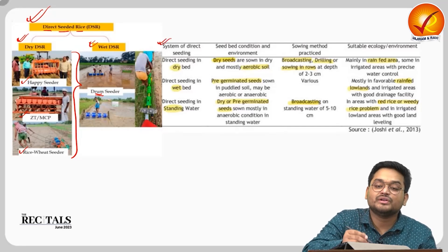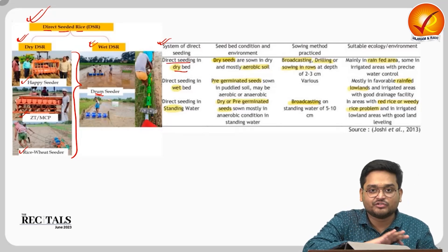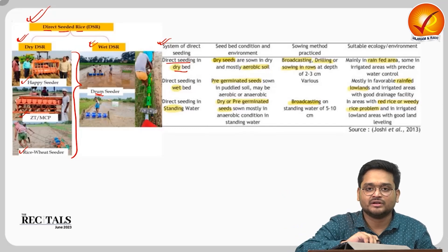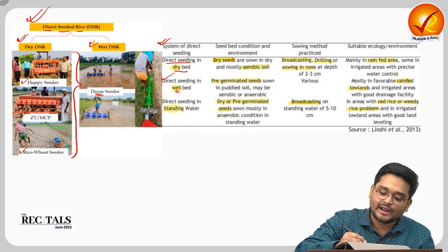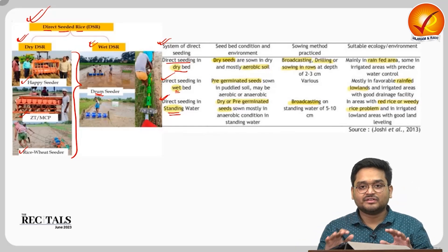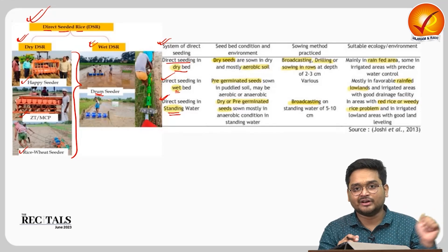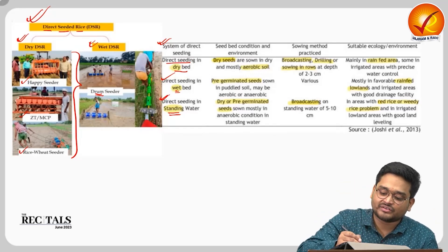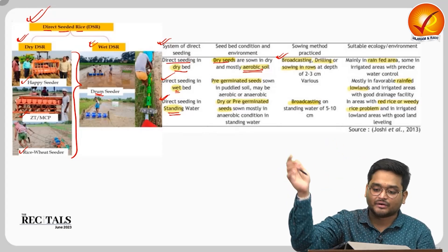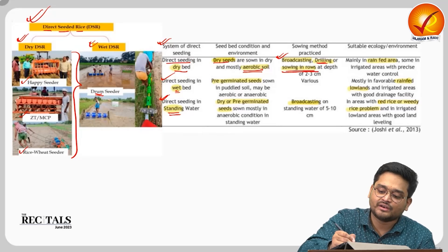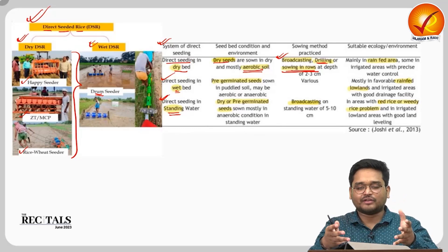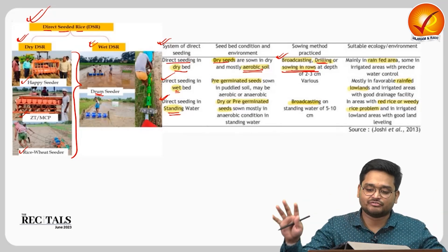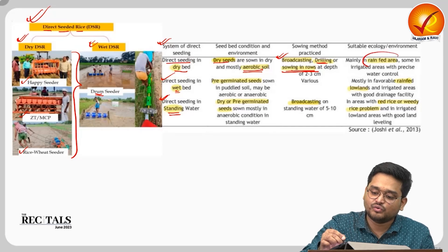There are three types of DSR: direct seeding in dry bed where the field is entirely dry; direct seeding in a wet bed where the field is somewhat wet; and direct seeding in standing water, which is similar to the traditional method. Under the dry bed approach, dry seeds are sown in aerobic soil by broadcasting — spreading seeds by hand — or via drilling and sowing in rows using a happy seeder machine.